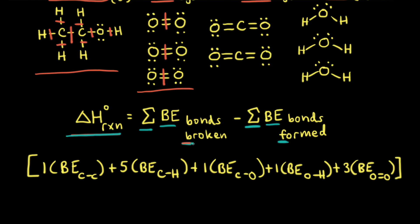It takes energy to break a bond, so the summation of the bond enthalpies of the bonds that are broken is going to be a positive value. And since it takes energy to break bonds, energy is given off when bonds form. So next we're going to sum the bond enthalpies of the bonds that are formed, and notice we have a negative sign because this energy is given off.